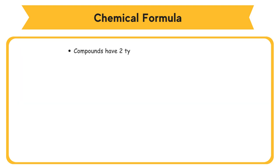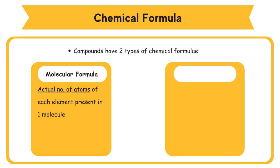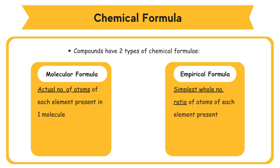For compounds, there are two types of chemical formulae, namely Molecular Formula and Empirical Formula. Molecular Formula is the formula that shows the actual number of atoms of each element present in one molecule of the compound. Empirical Formula is the formula that shows the simplest whole number ratio of atoms of each element present in the compound. For example, ethane: Molecular Formula C₂H₄, where C to H ratio equals 1 to 2. Empirical Formula: CH₂.